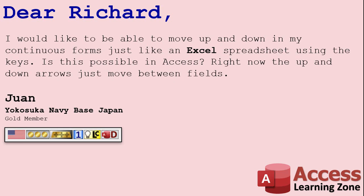Today's question comes from Juan at the Yokosuka Navy Base Japan, one of my gold members. Juan says: I would like to be able to move up and down in my continuous forms just like an Excel spreadsheet using the keys. Is this possible in Access? Right now the up and down arrows just move between fields.